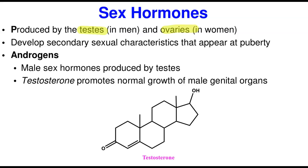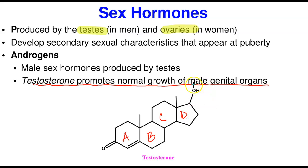Androgens are the male sex hormones produced by the testis. The most common and important one is testosterone. Testosterone promotes the normal growth of male genitalia and is responsible for masculinity in males. The structure has the ABCD fused ring system, an OH group, a ketone group, and methyl groups. When a man grows a deeper voice and develops other masculine characteristics, that comes from what testosterone does.